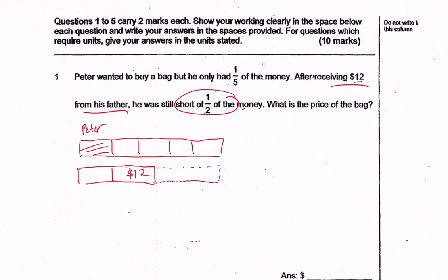But what happens if we change one-fifth into 2 over 10, and we change one-half into 5 over 10? Now, what you realize is that after receiving $12, the fraction increased from 2 over 10 to 5 over 10. And what does it mean? This represents that three units is $12.